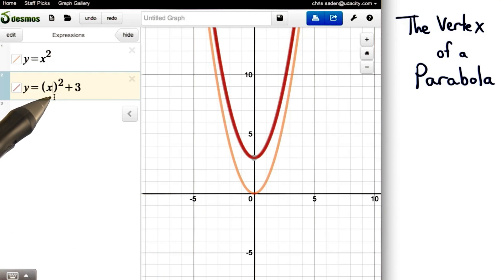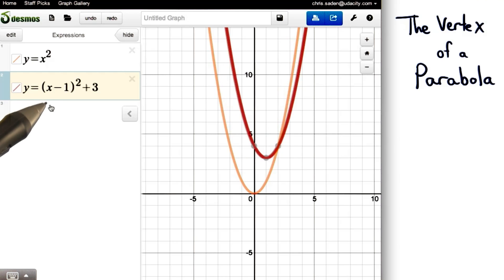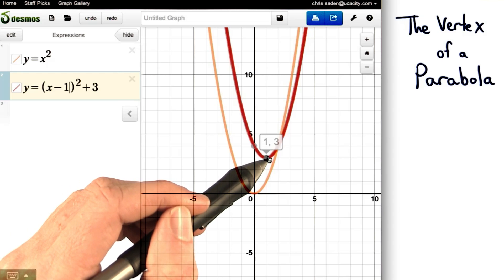To shift the graph left or right, we're going to change this binomial. If I subtract 1 from x, it really moves the graph 1 unit to the right. Now, the vertex is here.